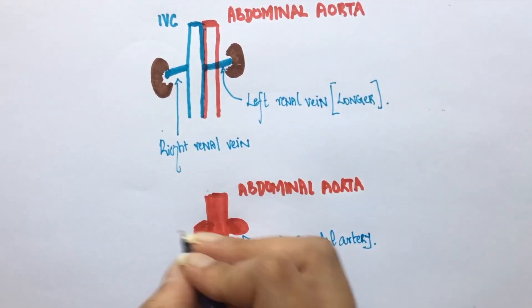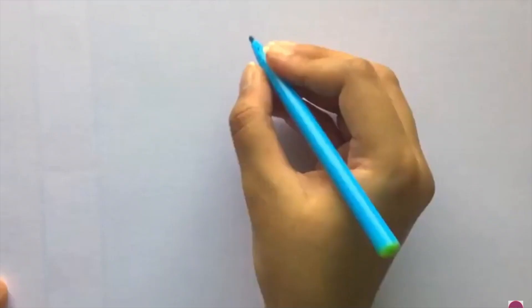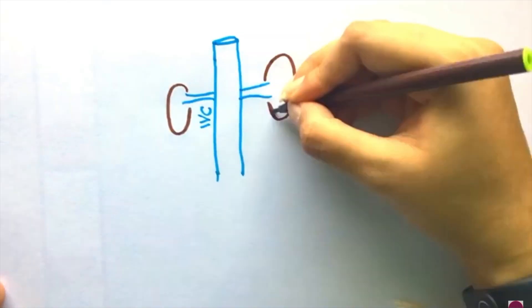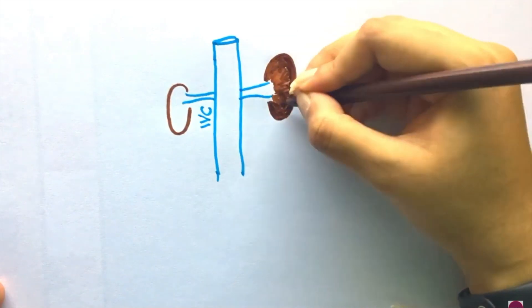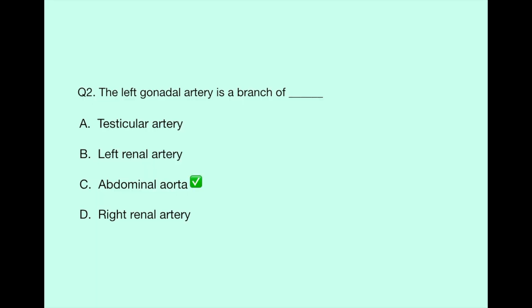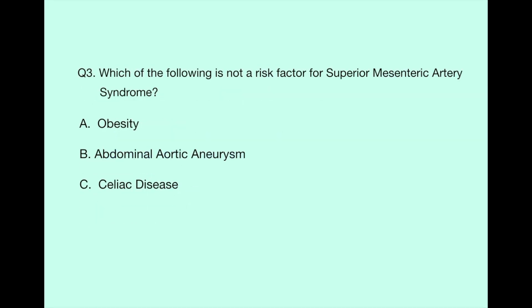This should not be confused with the gonadal veins. The left gonadal vein drains into the left renal vein, while the right gonadal vein drains into the inferior vena cava.